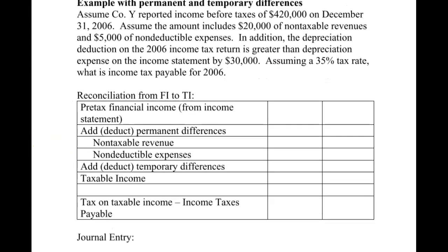A company reported financial income of $420,000. Included in that amount are $20,000 of non-taxable revenue — let's call it municipal bond interest revenue — and $5,000 of non-deductible expenses — let's call that an EPA fine. We also have a temporary difference with depreciation: the deduction on the tax return is greater, meaning they use an accelerated method on the tax return, and it's greater by $30,000. The tax rate is 35%.